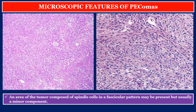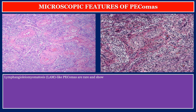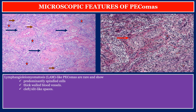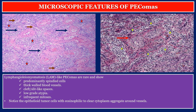An area of the tumor composed of spindle cells in a fascicular pattern may be present, but is usually a minor component. Lymphangioleiomyomatosis (LAM)-like PEComas are rare and show predominantly spindle cells, thick-walled blood vessels, cleft slit-like spaces, low-grade atypia, and infrequent mitosis. Notice the epithelioid tumor cells with eosinophilic to clear cytoplasm aggregating around blood vessels.